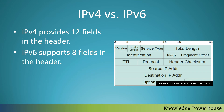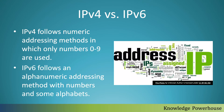Another difference is in the header: IPv4 has 12 fields, whereas IPv6 supports only 8 fields. The reduction in header fields improves efficiency. IPv4 uses numeric addressing, using numbers from 0 to 9, whereas IPv6 uses alphanumeric addressing — numbers as well as alphabets — since it is based on hexadecimal numbers.